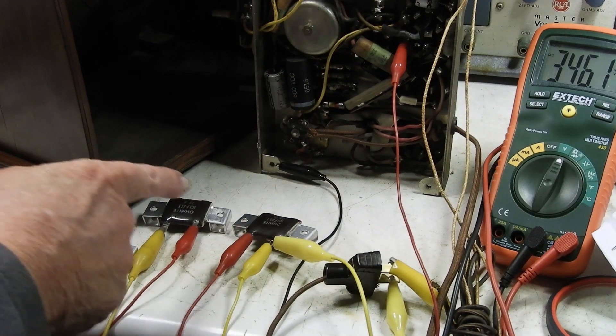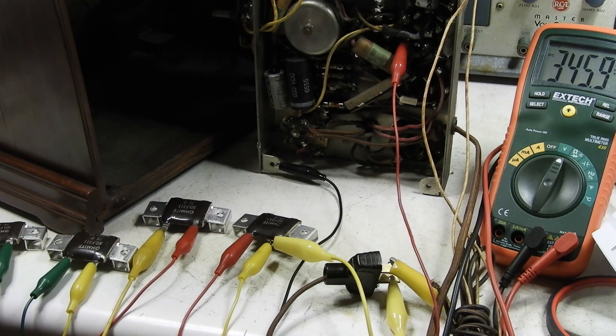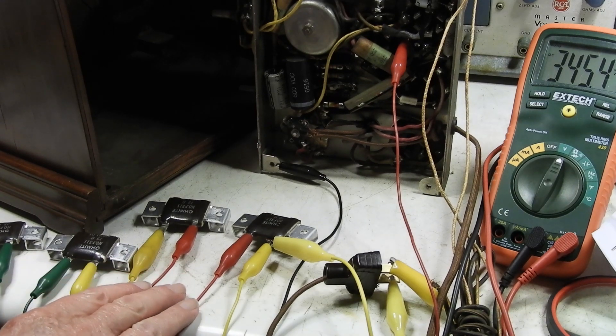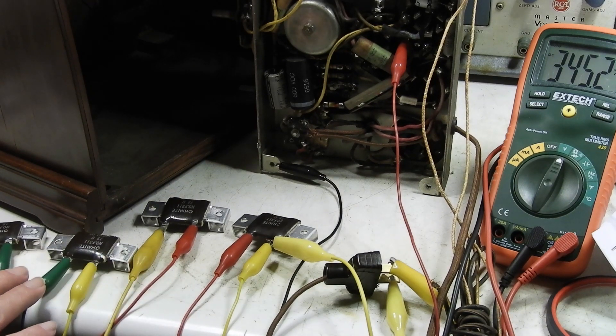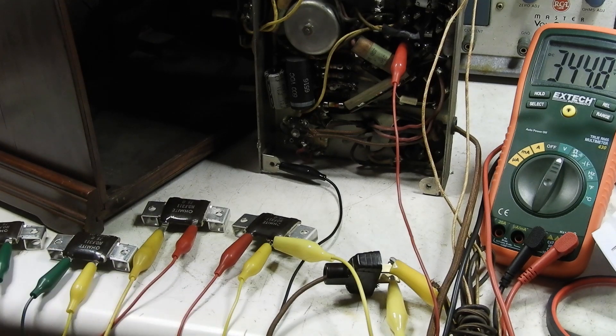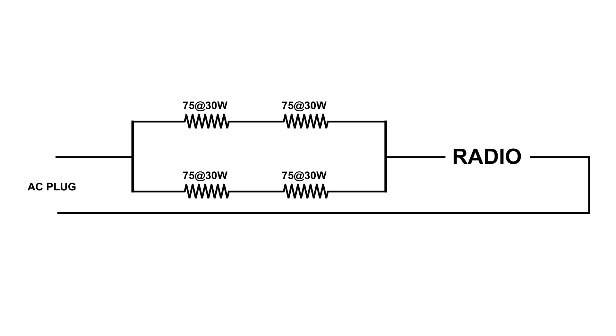Now it's in series - the red's in series, the green is in series, and the yellow is in parallel. So we've got still 75 ohms but now this should put the watts up to about close to 120.